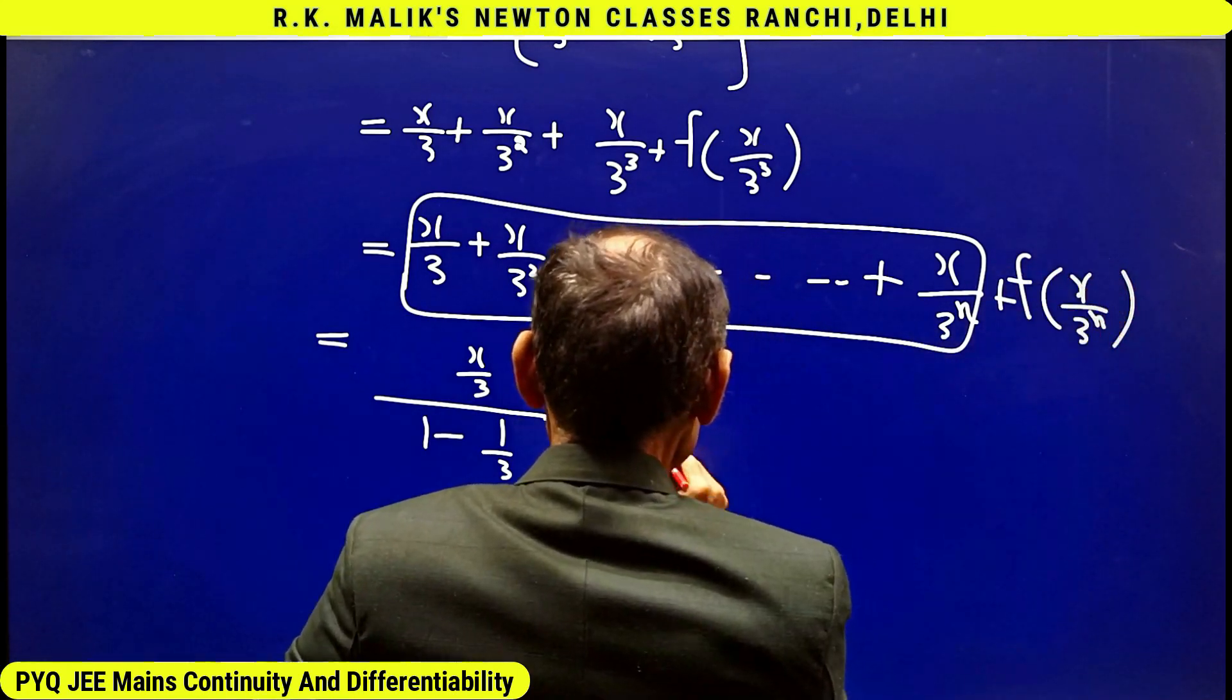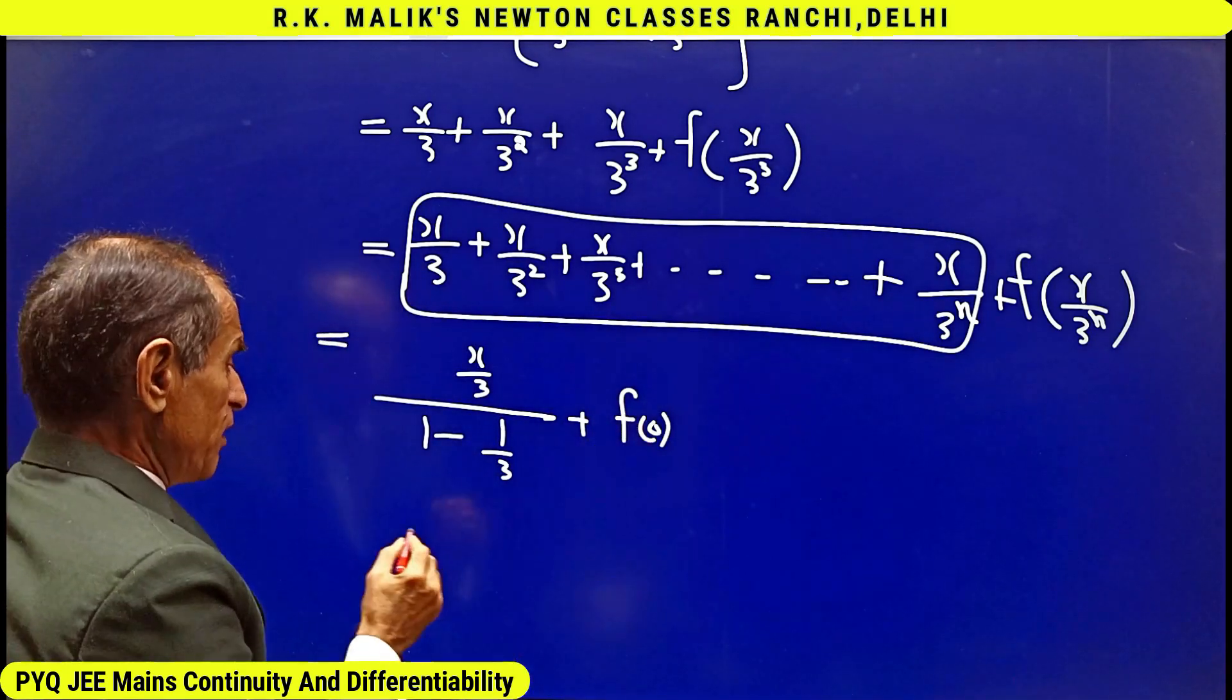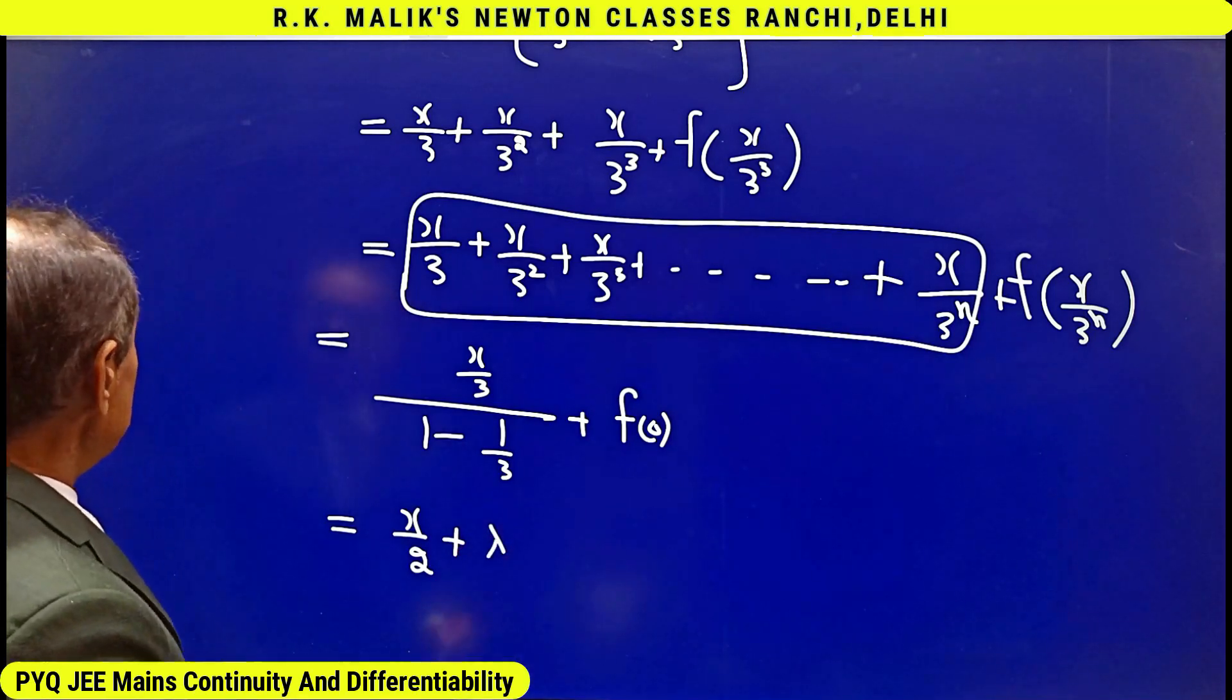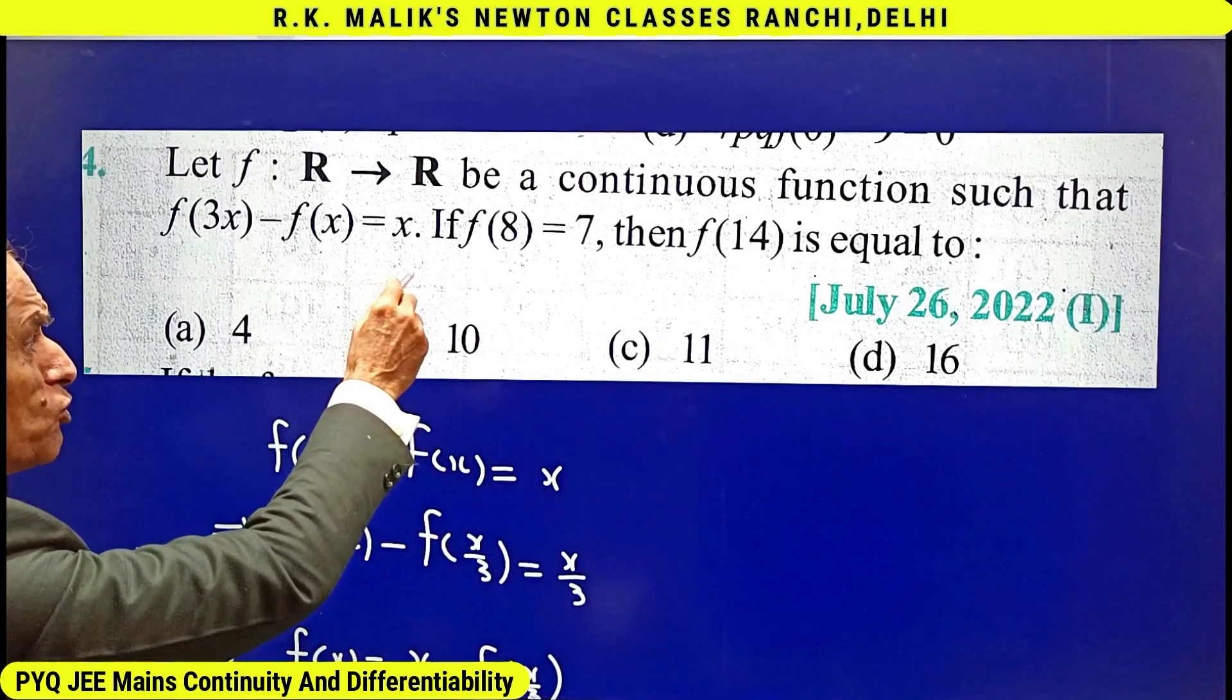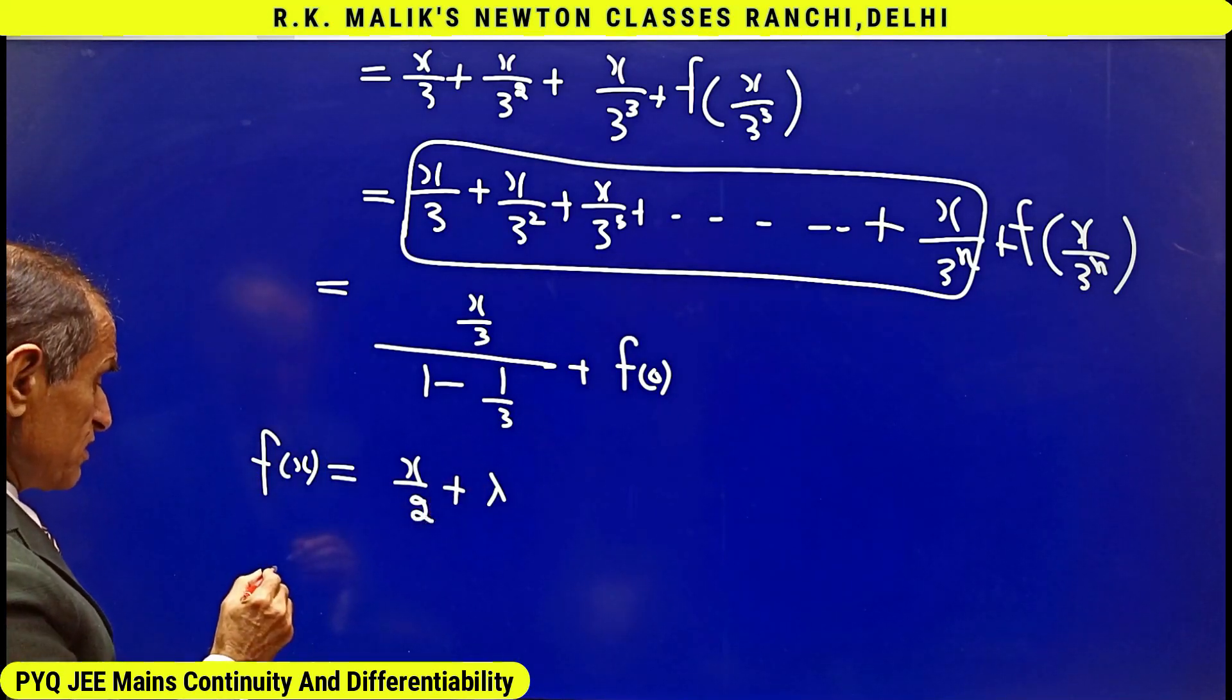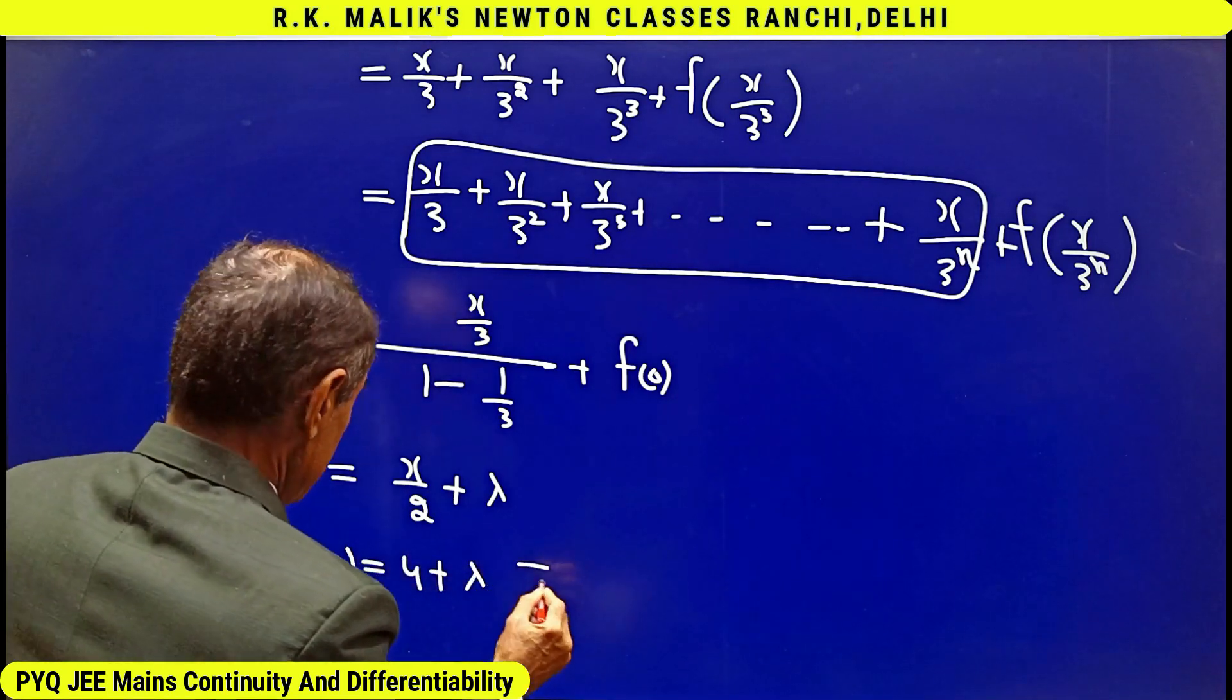And as n tends to infinity this will be tending to 0, and because the function is given to be continuous, hence it will become f(0). Let us suppose f(0) as λ. I will be getting x/2 + λ. This is f(x).